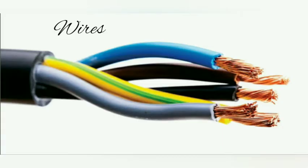Taking the wire in his hand, the son asks his father, 'What is this?' The father explains that it is a wire used to give electrical connections to their house. Each thick wire has many thin metal wires inside it, and these thin metal wires are made up of copper.